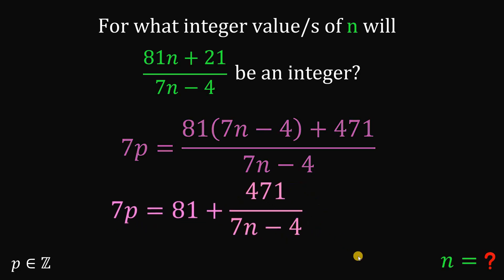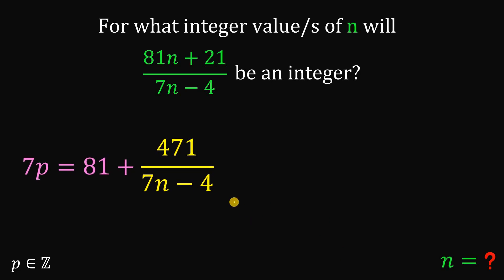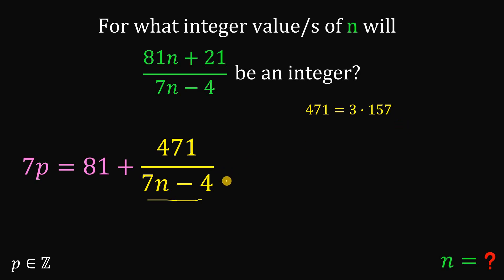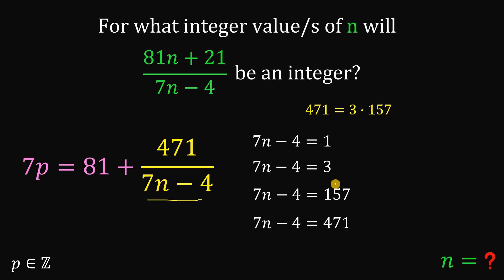For 471/(7n - 4) to be an integer, (7n - 4) must be a factor of 471. The factors of 471 are: 471 = 3 × 157. So we only have a few values for (7n - 4): it can equal 1, 3, 157, or 471.